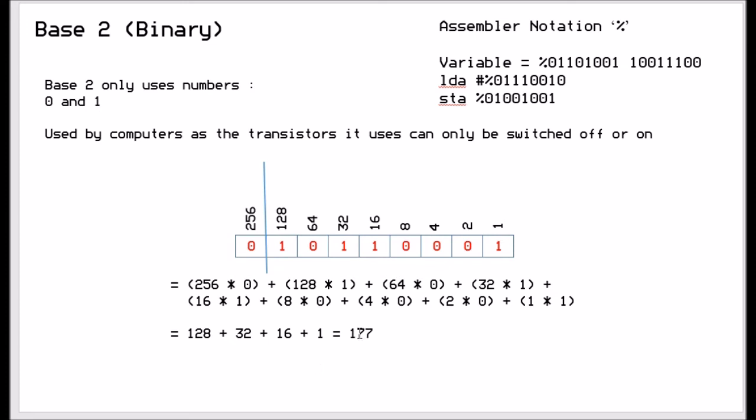And as you can see, in base 2 you can only use 0s or 1s, you can't use anything else because it's a numerical representation of the transistor state. Now in assembler, the notation is a percentage sign. So if you have a variable, you would say variable equals percent and then the binary number, so it would be 01101001 and so on. And same with the instructions, LDA hash percentage and then the binary representation, and then STA as well is the binary representation, but you must use the percentage sign or the assembler won't be able to work out what number you're trying to give.